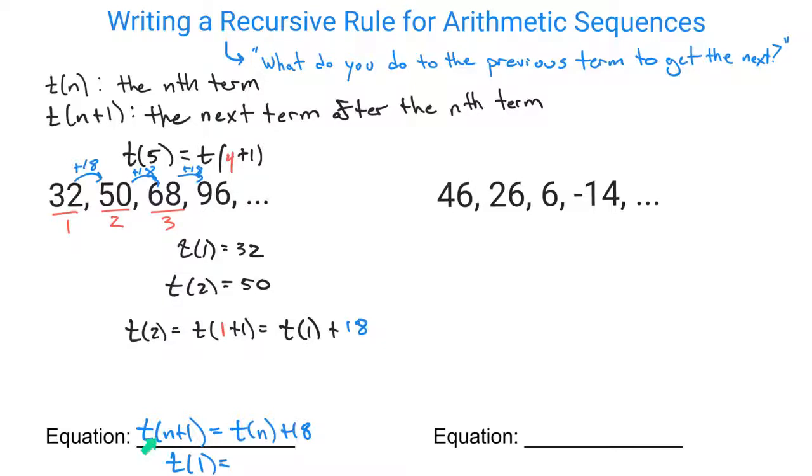Because if all you were given was this recursive rule, you wouldn't know that you're starting at 32. So that's why you need to also have a secondary statement which tells you what term 1 is. You can say term 0, but we like to use term 1.